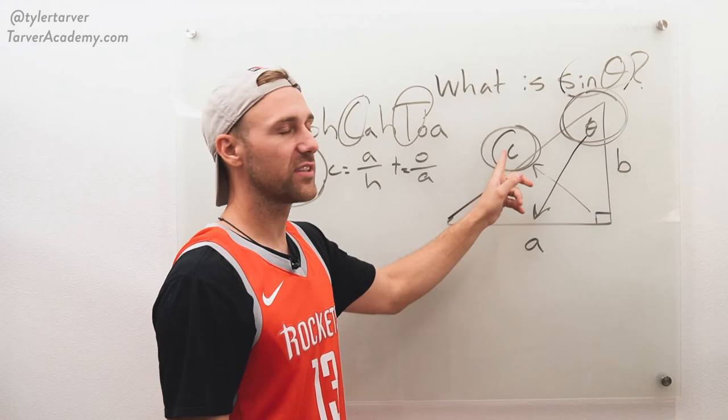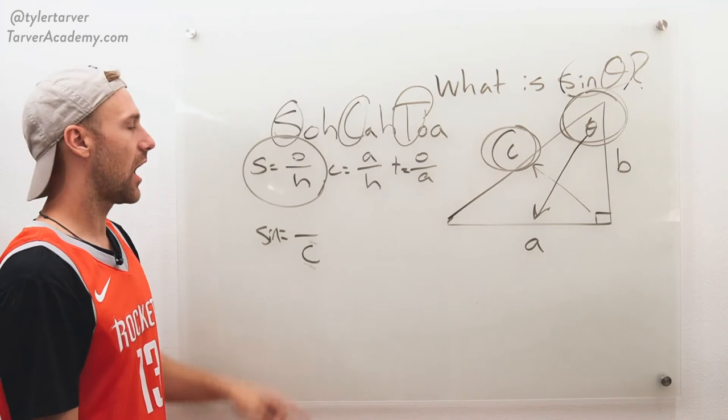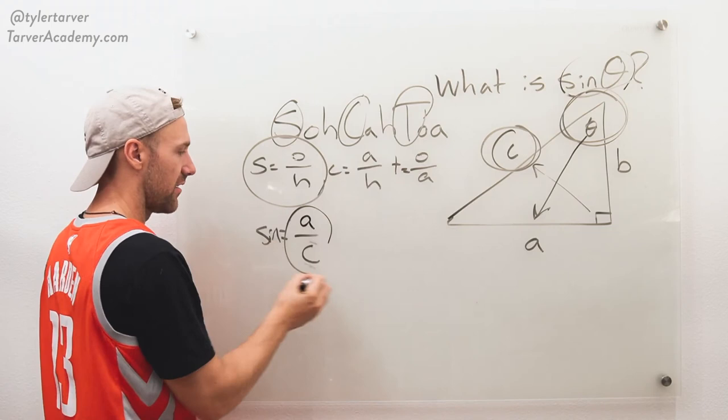And if you're like, well, Tyler, C is adjacent also. Hypotenuse always trumps adjacent. So that's hypotenuse. Boom. Knocked it out. Now we've just got opposite and adjacent. I care about opposite, which is A. So the sine of that would be A over C. And you did it.